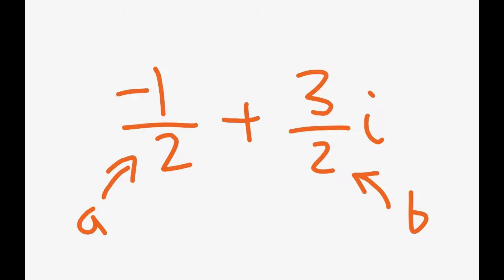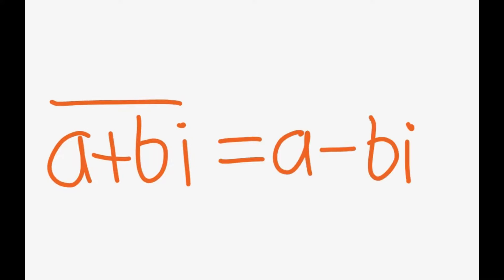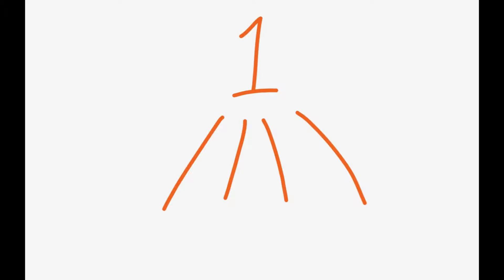Before we continue, we need to define some terminology. We define the conjugate of any complex number as a bar on top of the number. The conjugate of a number a plus bi is simply a minus bi. Additionally, any Gaussian integer that is a factor of 1 is called a unit. In the case of Gaussian integers, 1, negative 1, i, and negative i are units.